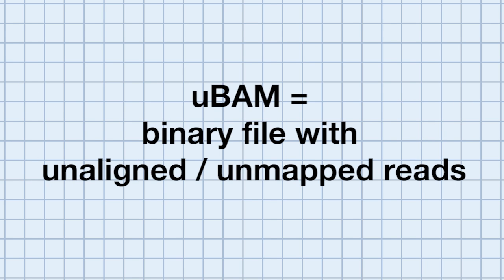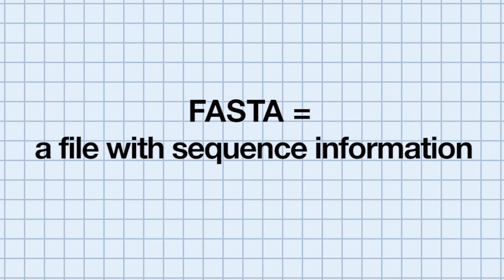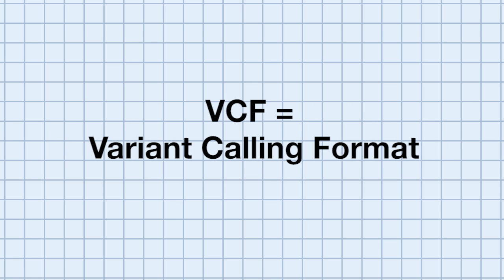A UBAM is a binary file with unaligned, or unmapped, reads. The FASTQ file is a list of reads generated with quality scores for each read, while the FASTA file is simply a file with sequenced information. Finally, a VCF file is a variant calling format file that describes the variant of interest and its location.